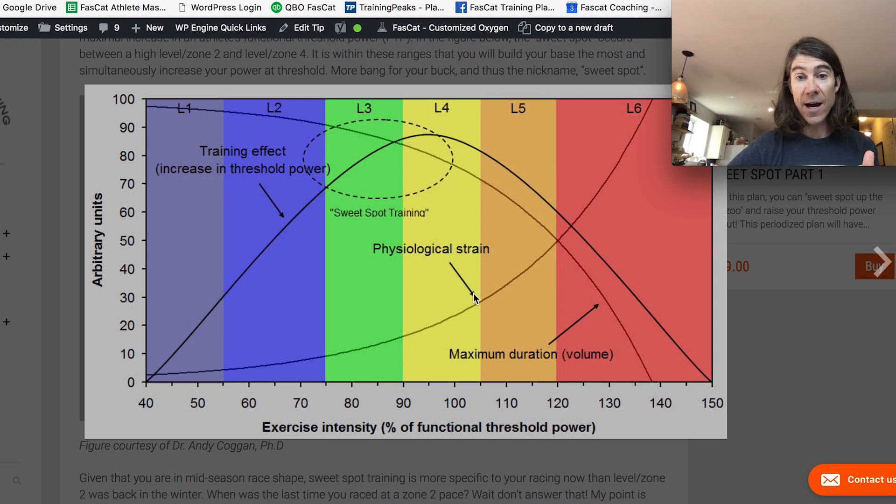However, the strain is high. Now look at the physiological strain of sweet spot relative to the physiological adaptations here. So pretty close to zone four, but a lot less strain. And therein lies the principle of sweet spot training. You get a lot of physiological adaptations with not a lot of physiological stress.